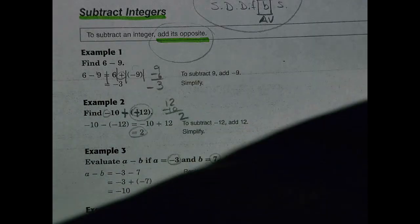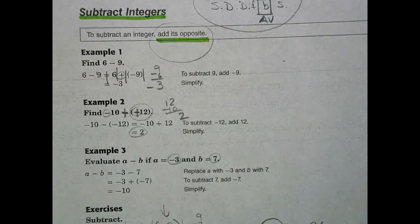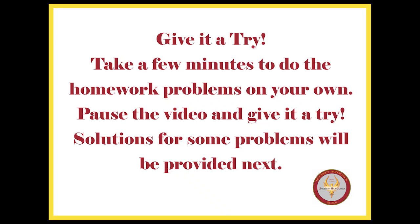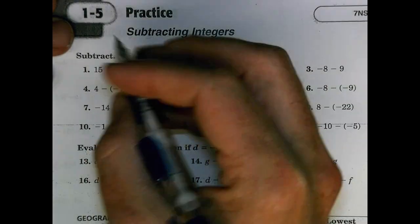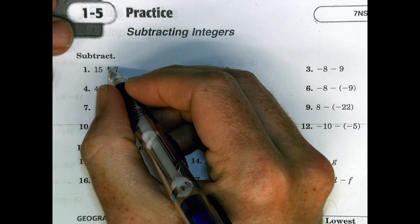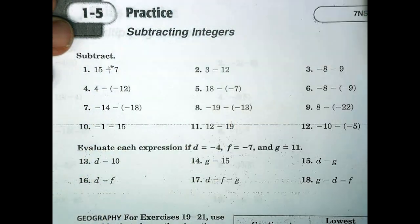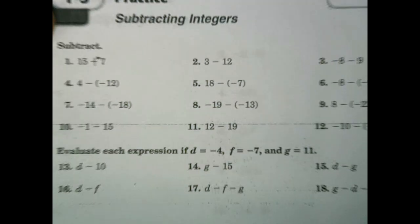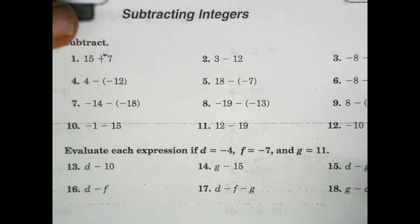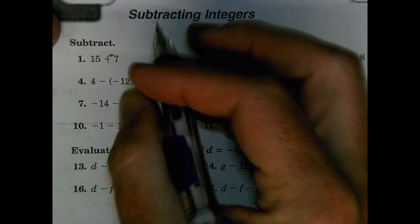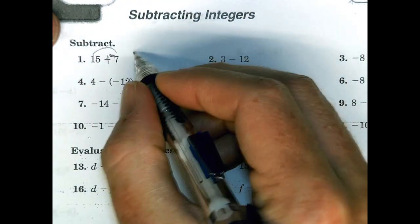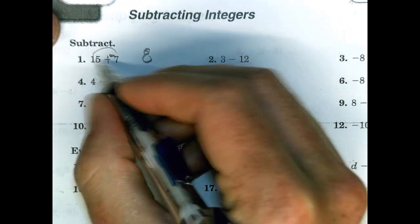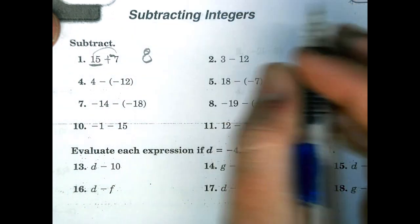Pause here and work on the odd numbers for homework, then check solutions after. Let's spot-check a few together. Number 1: add the opposite — 15 plus negative 7. Signs are different, find the difference: 15 minus 7 is 8, and the greater absolute value is 15, so keep it as positive 8.